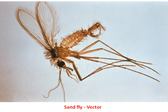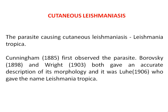This slide shows the vector, the Phlebotomine sandfly, which acts as a vector in transmitting the disease-causing agent, Leishmania tropica. The parasite causing Cutaneous Leishmaniasis is Leishmania tropica. A scientist by name Cunningham in 1885 first discovered this parasite. Later, Borowski in 1898 and Wright in 1903 both gave an accurate description and morphology of this parasite. It was Luhi in 1906 who gave the name Leishmania tropica, which causes Cutaneous Leishmaniasis.